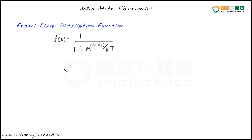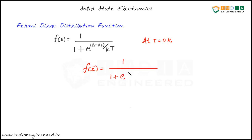We have defined Fermi level as the energy level where the probability of finding an electron is 0.5. Now let us consider the Fermi-Dirac distribution function at T equal to 0 Kelvin. At T equal to 0 Kelvin, f(E) equals 1 divided by 1 plus e to the power of (E minus Ef) divided by 0. The value of this function f(E) depends on the relative magnitudes of E and Ef.